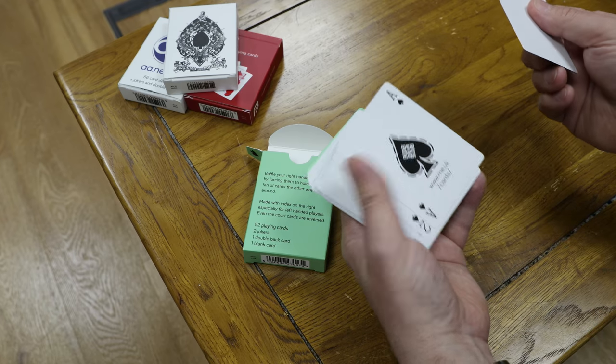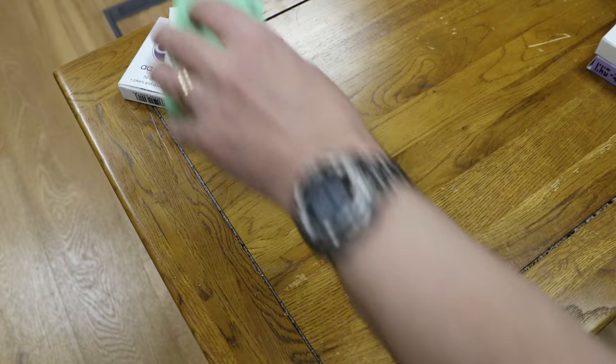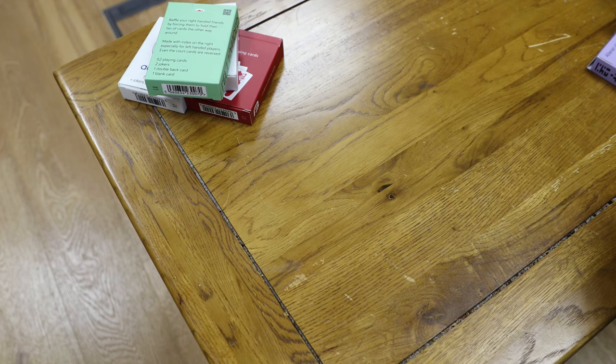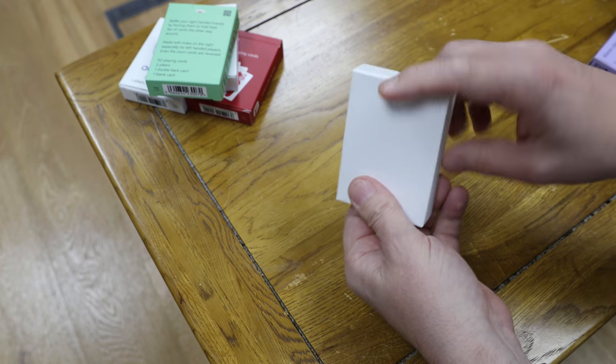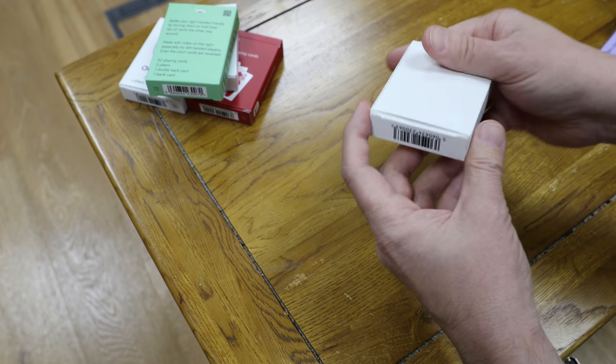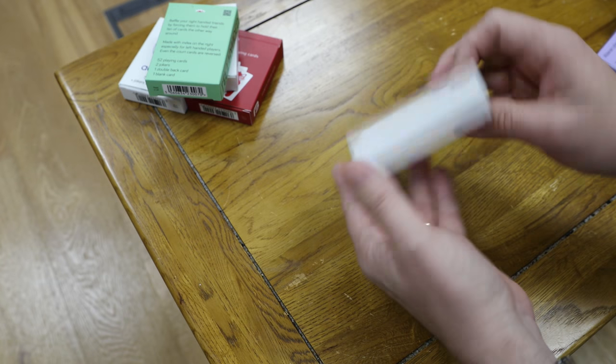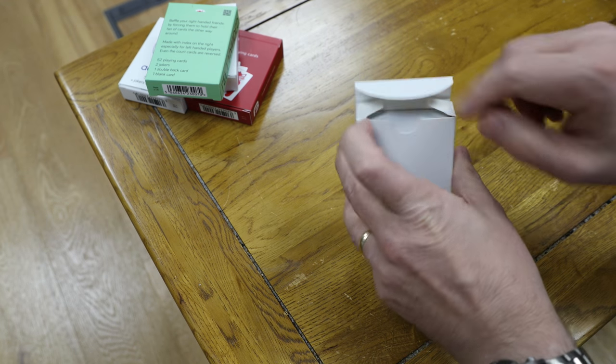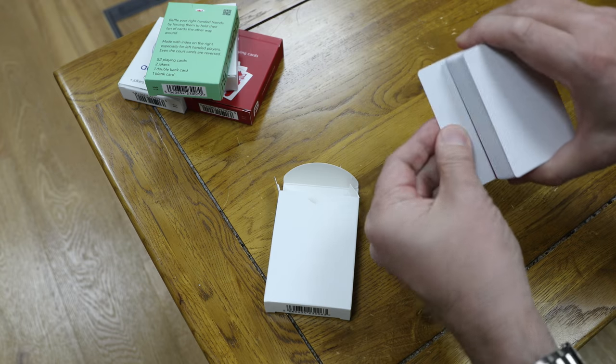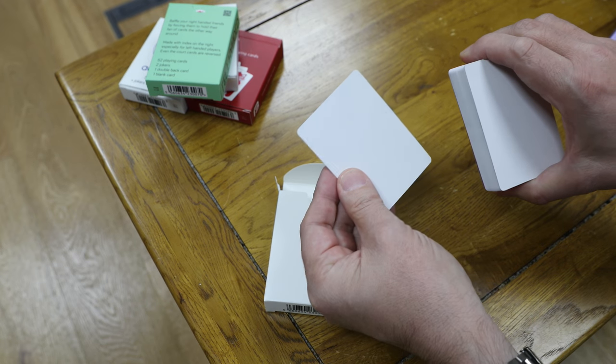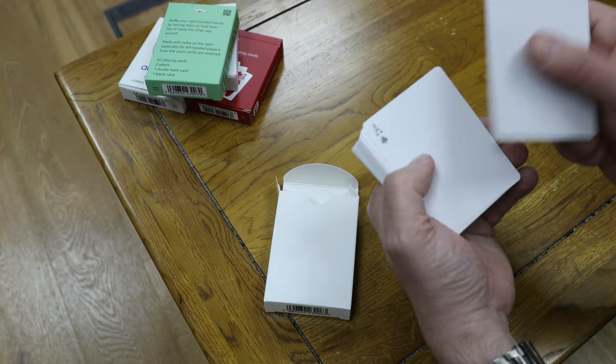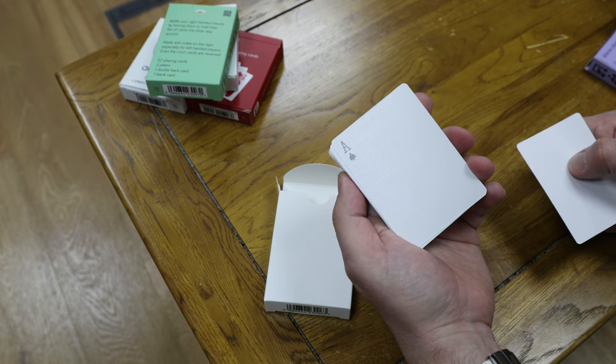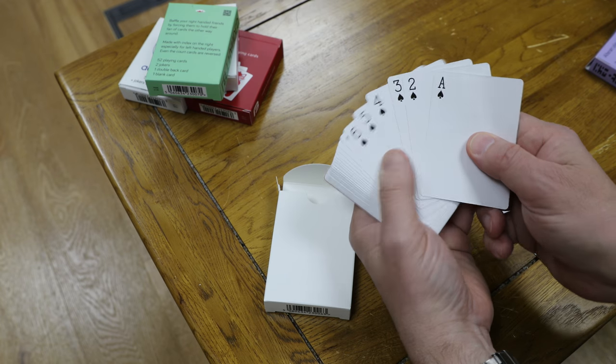And then finally we have my white deck, which as you can see doesn't say much. There's actually just the barcode, and you can just about catch who printed it on the slip. Now again, we have a blank card and we have a double-backed card, but the backs of these cards are white, so you can't actually tell those two apart. The cards only have the index in one corner, so they are the absolute minimum you need to play cards. There's no other markings on the card, and the backs are white, so it's almost like a blank deck of cards.